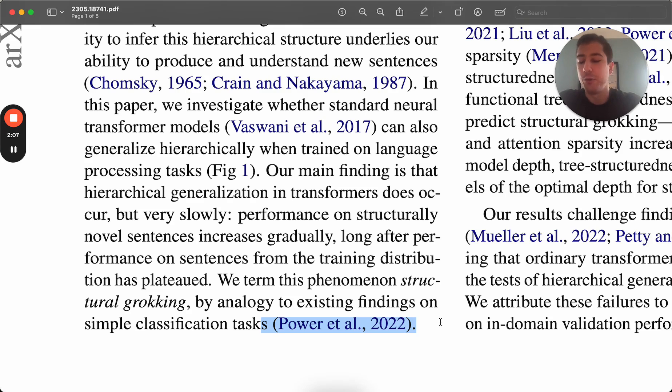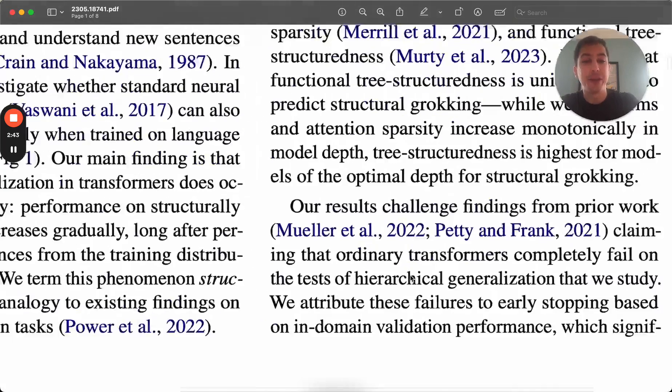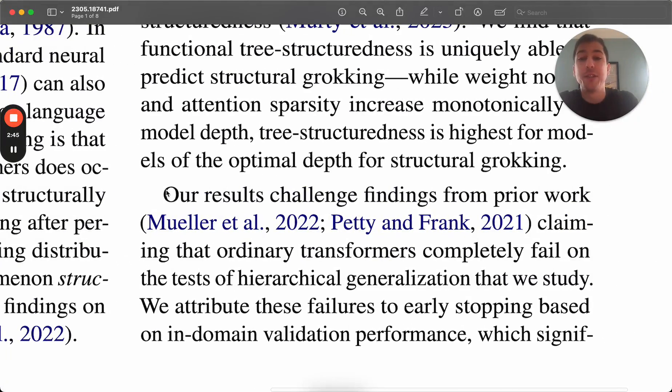The model will not do well. But if you continue to train your transformer on the same data that you already have, well beyond when your validation accuracy would tell you to stop, eventually it does figure out how to handle those out-of-domain problems as well. And so this is the term they call this grokking, that it's able to figure out kind of almost magically how to solve general versions of the problem that you're giving it, not just the training version of the problem that you're giving it.